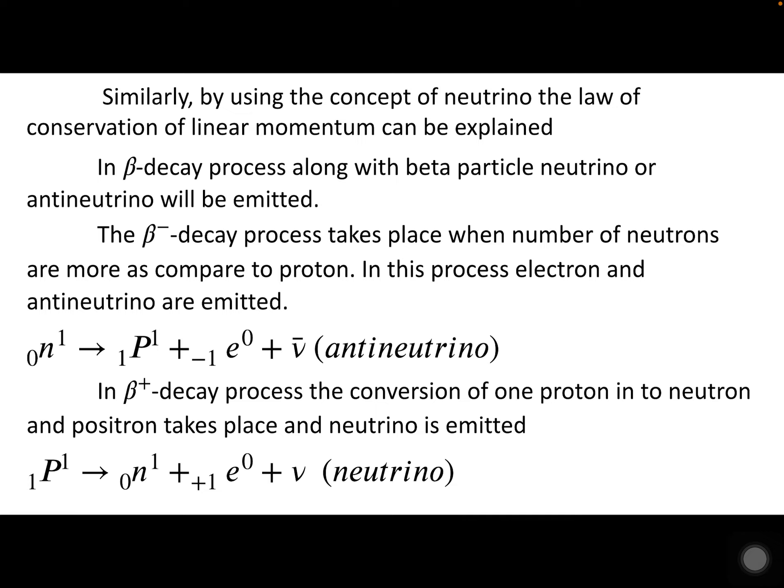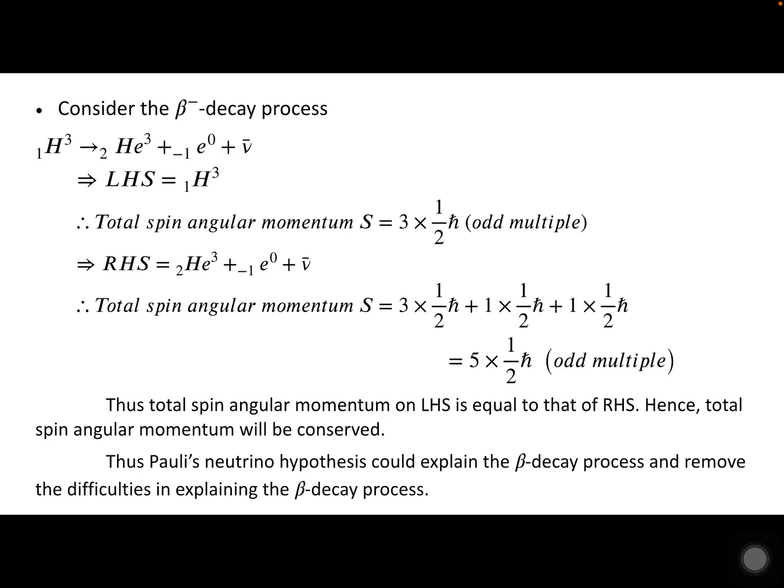A positron is emitted if the nucleus is proton-rich, and an electron is emitted if the nucleus is neutron-rich. As an example, consider the beta-negative decay process where tritium ¹H³ gets converted into helium ²He³ with emission of an electron and anti-neutrino.